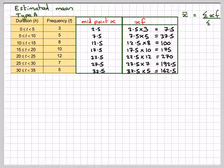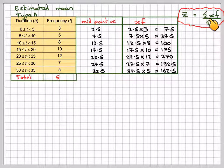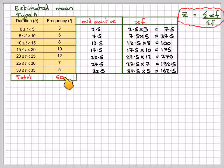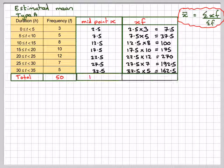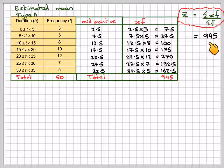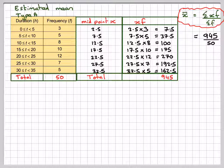To find the mean, the mean is the sum of FX divided by the sum of F. The sum of F is 50. We were told 50 batteries. And the sum of XF is going to be 945. This gives me 945 divided by 50, which is 18.9 hours.